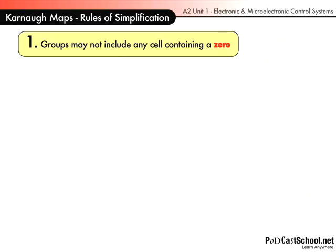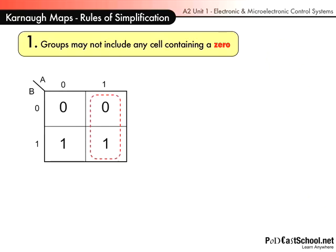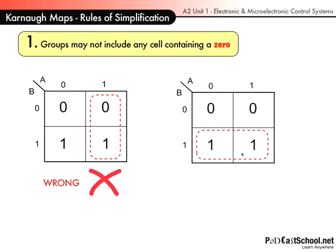So rule number one is groups may not include any cell containing a 0. So this is obviously wrong because a 0 is grouped here. Whereas that would have been the correct way to group this.